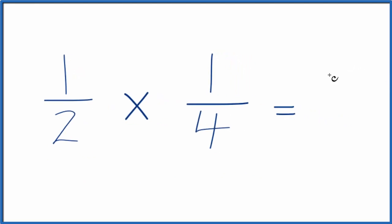So one times one, that's one, and then two times four, that's eight. So one half times one fourth, that's one eighth.